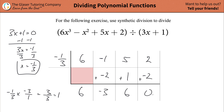Now we just have to make sure we know what we're working with. This last term will always represent your remainder. The term preceding that represents your constant term. Then this represents x, and this represents x squared — the process would continue with x cubed and x to the fourth depending on how many columns you had.